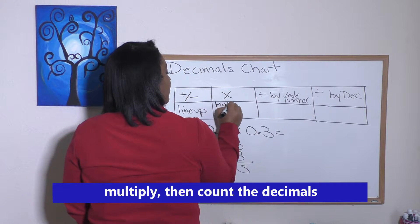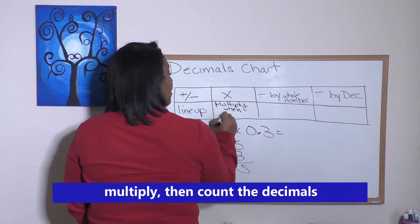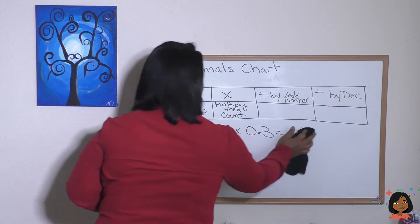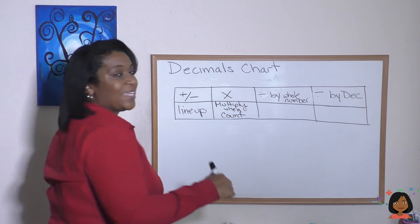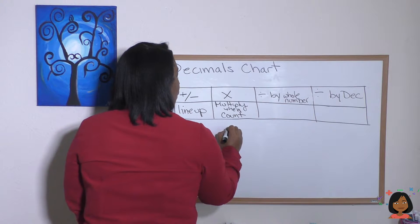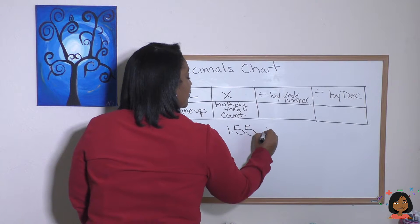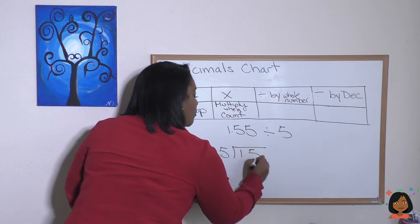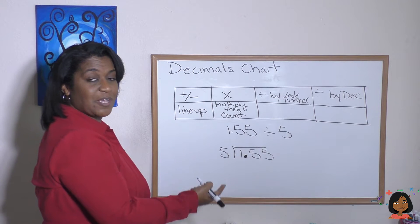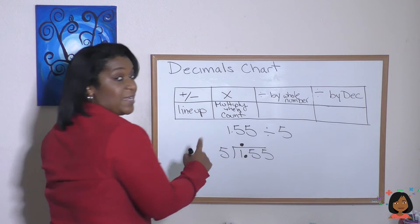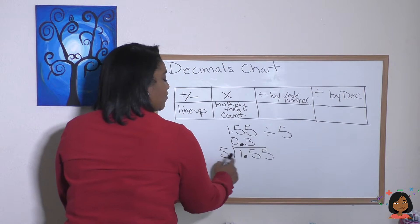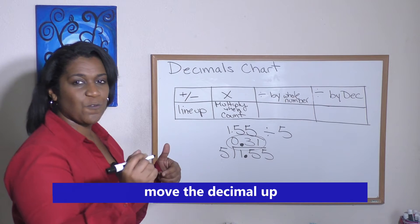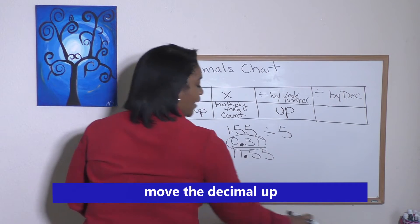What about when we divide? There's two ways to divide: we can divide by a whole number or divide by a decimal. Let's say we're going to divide 1.55 divided by the whole number 5. We would write our division problem, then put that decimal in your quotient. Now we divide: five goes into 15 three times, five goes into five one time. That would be our answer. So the shorthand for division by a whole number: we move the decimal point up.